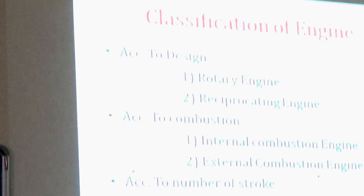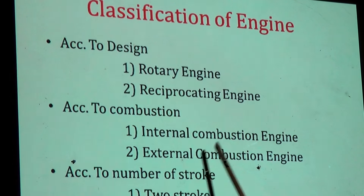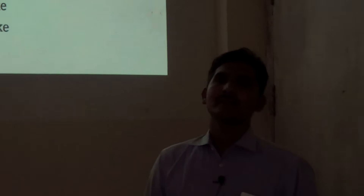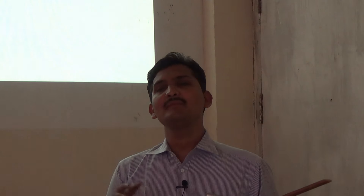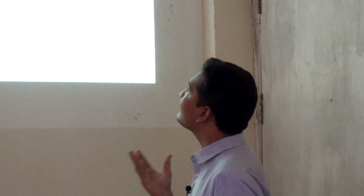Next, according to combustion, there are two types: internal combustion engine and external combustion engine. If combustion of the fuel takes place inside the engine, it is called an internal combustion engine. If combustion takes place outside the engine, it is called an external combustion engine. Examples of internal combustion engines are all engines used in automobiles. The example of an external combustion engine is the steam turbine.